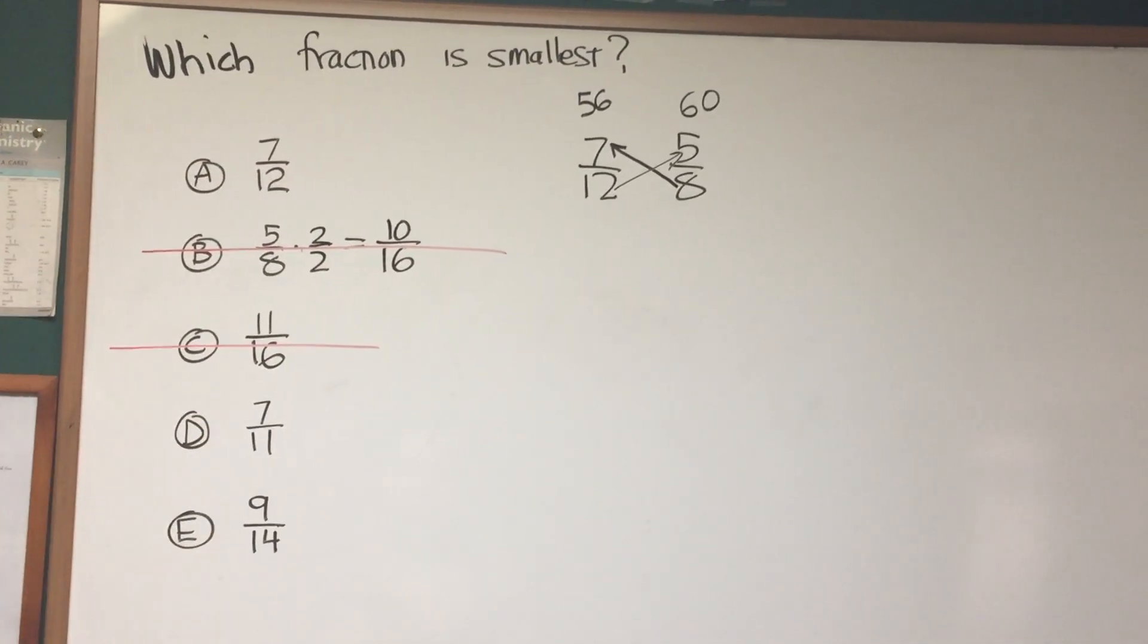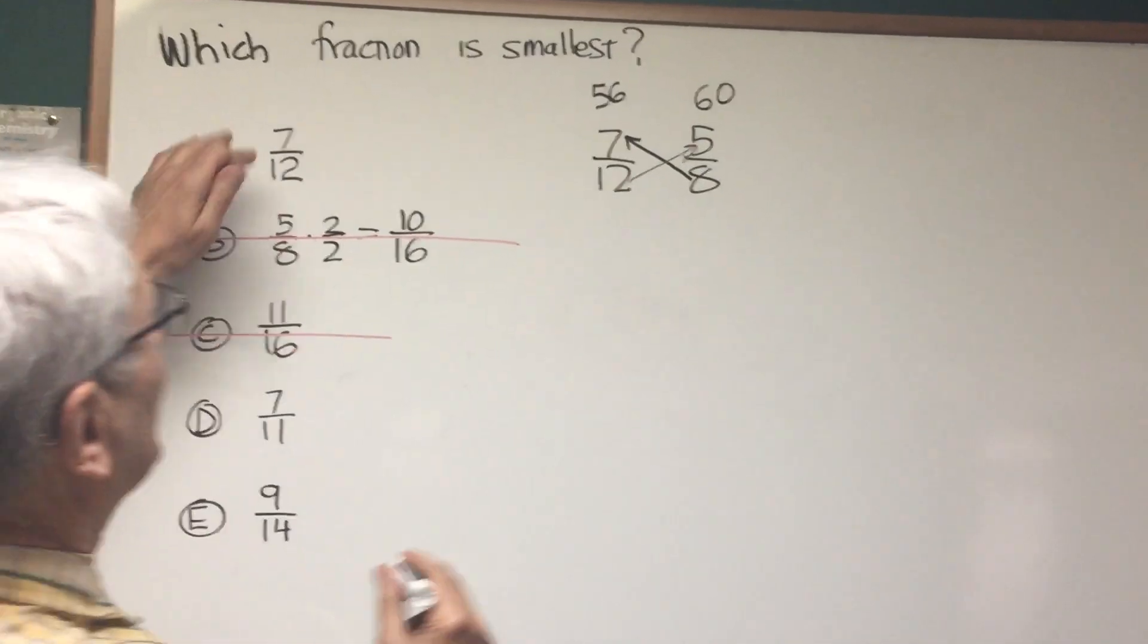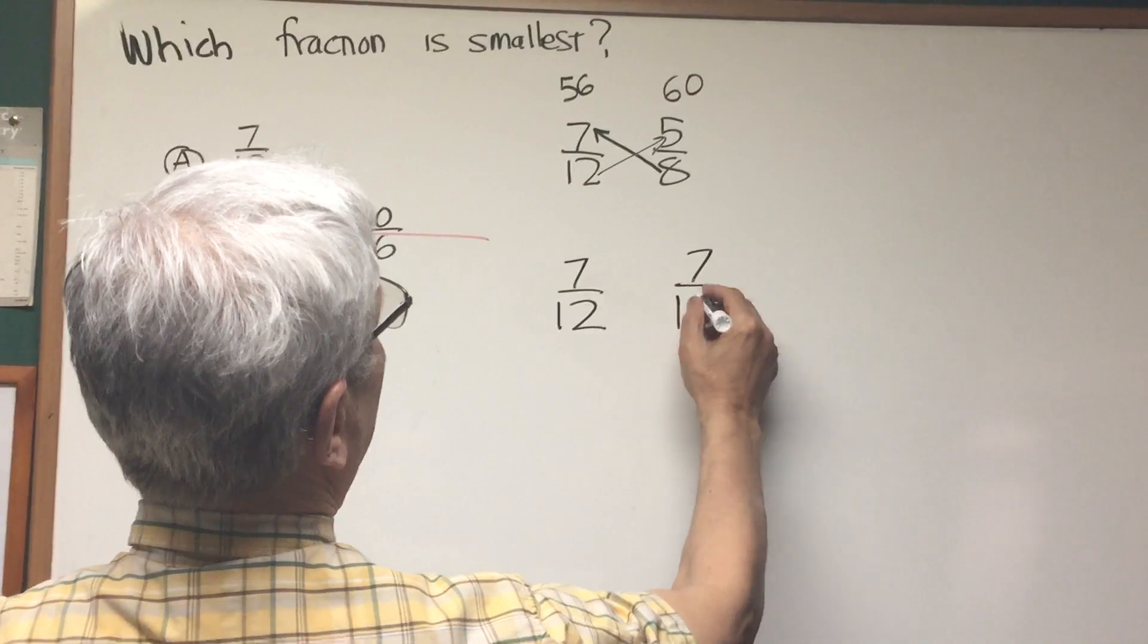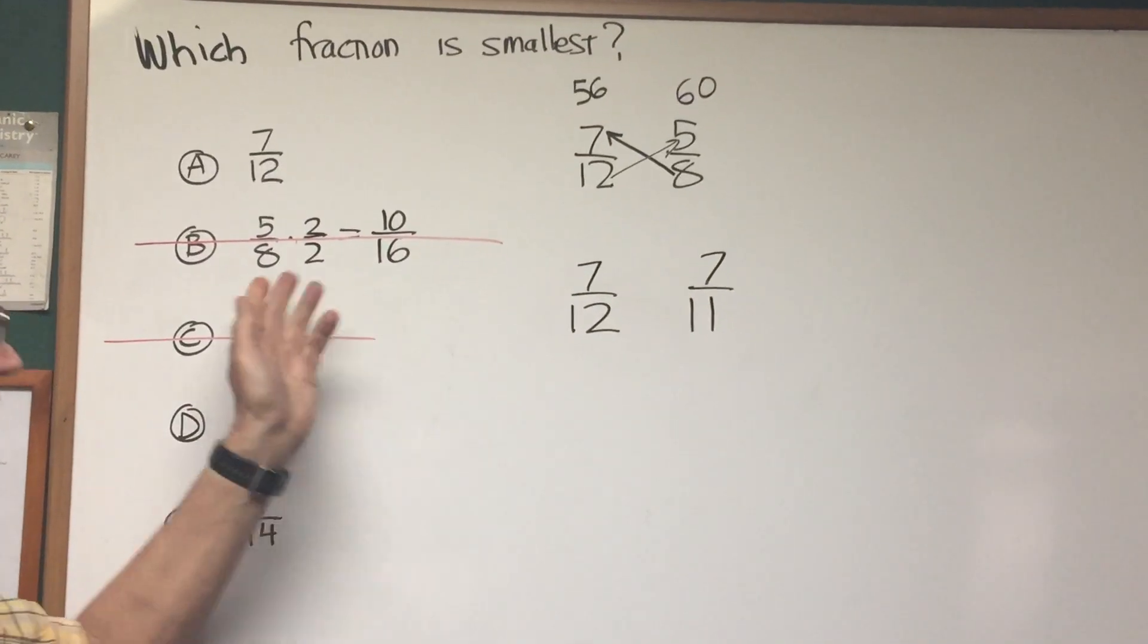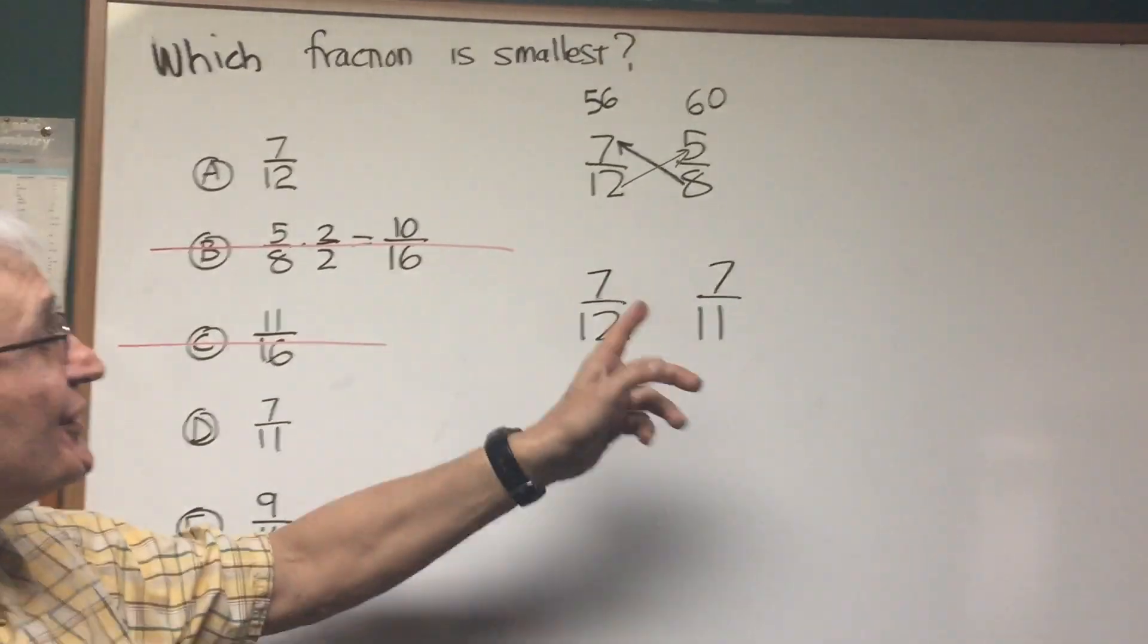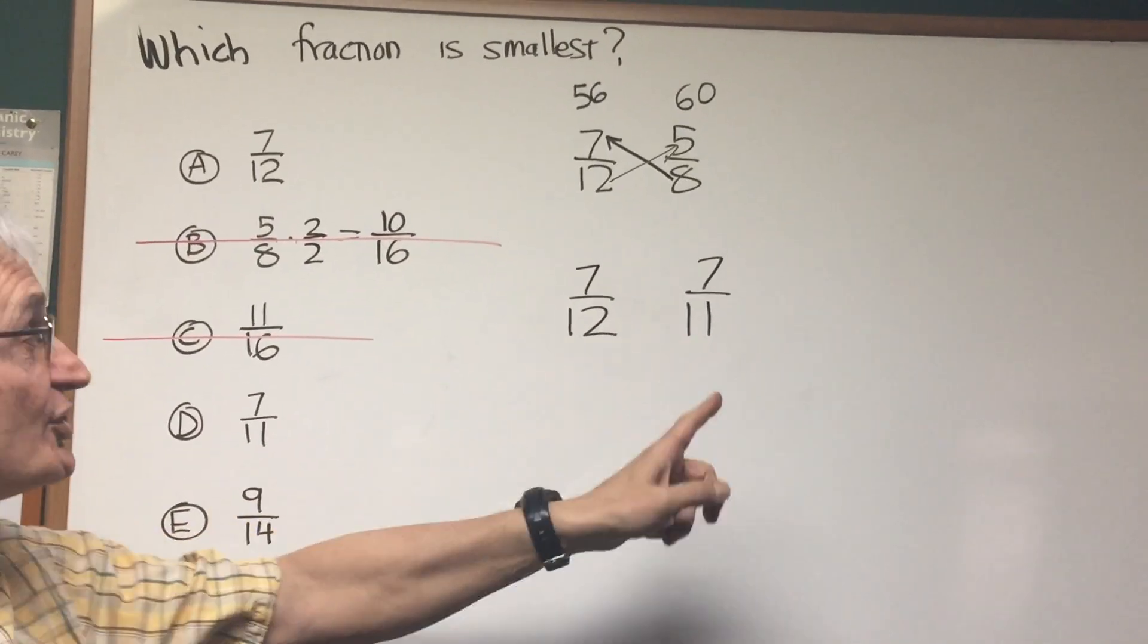7 twelfths, 7 elevenths, and 9 fourteenths. Okay, let's tackle these two. 7 twelfths and 7 elevenths. We have the technique of common denominator. Now we have the technique of common numerator. 7 twelfths or 7 elevenths? Which fraction is larger?